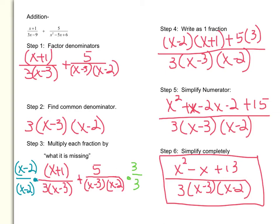One thing I want to point out is when we are simplifying our numerator, we are using our order of operations, what we would call PEMDAS. You multiply before you add. So that's why we multiply these terms first, and then we add them together.